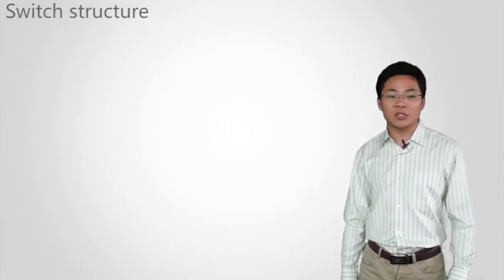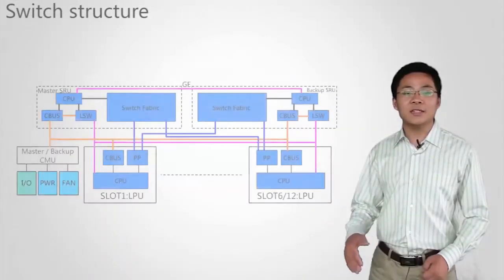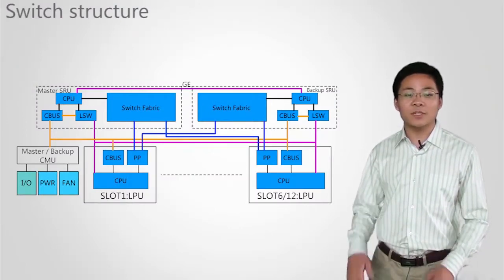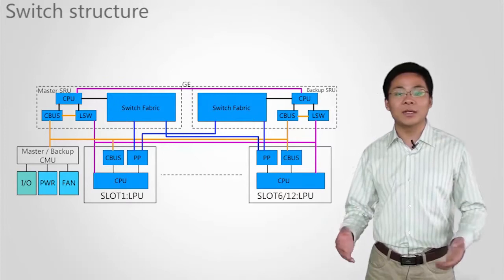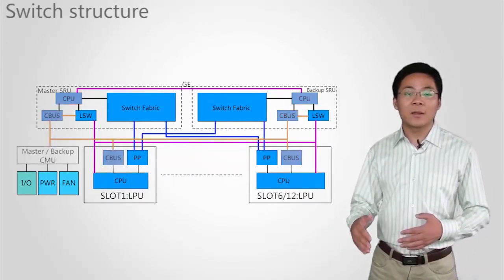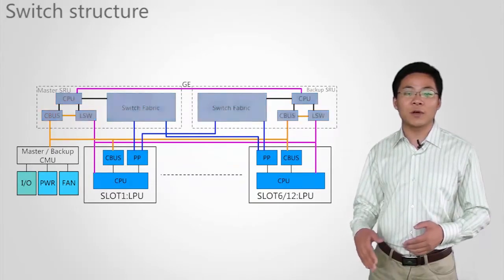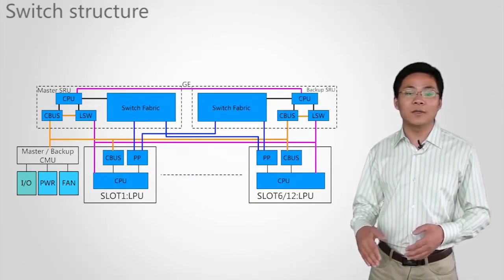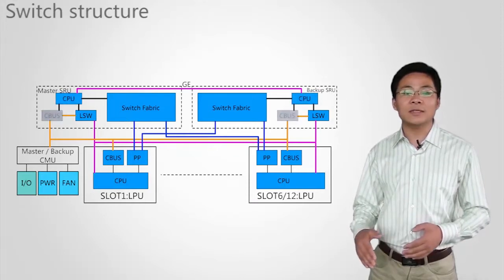Switch structure. The S9706 and S9712 use the same system structure. The system is divided into three planes: data plane, control plane, and management plane. The SRU is the core unit for each of these planes. An SRU consists of a CPU, CBUS, LSW, and a switching fabric unit.